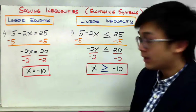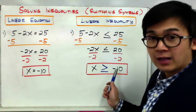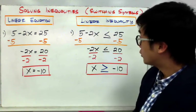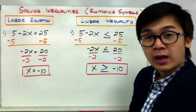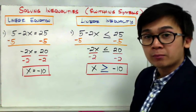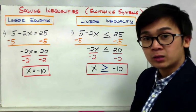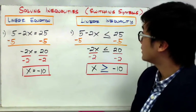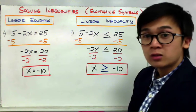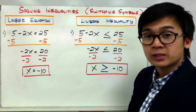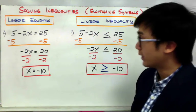You're switching the sign not because your answer is a negative value — you're switching it because you divided by a negative number. Every time you divide or multiply both sides by a negative number, the rule is to switch your inequality symbol. There is another rule for switching the inequality symbol, which we'll cover next.